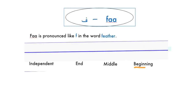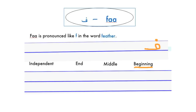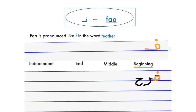In the beginning, the letter FA is written like this and usually it's connected to the letter after it. Here is an example: the word 'Farah,' which is a girl's name and it means happiness. Another example is the word 'Daftar.' When we say 'in the beginning,' we mean that the letter F is not connected to any letter before it, but it's connected to a letter after it.